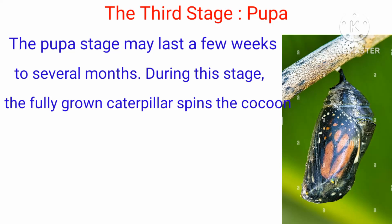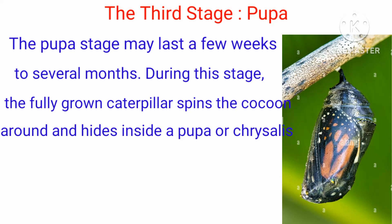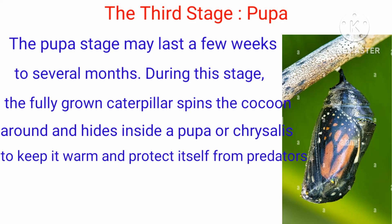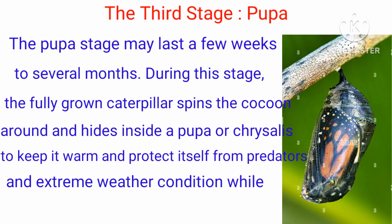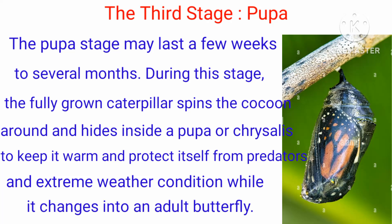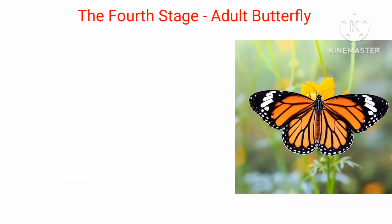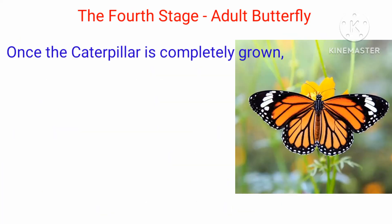The third stage is the pupa. The pupa stage may last a few weeks to several months. During this stage, the fully grown caterpillar spins a cocoon around itself and hides inside a pupa or chrysalis to keep it warm and protect itself from predators and extreme weather conditions, while it changes into an adult butterfly.